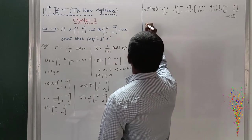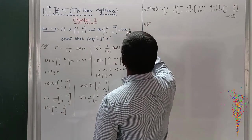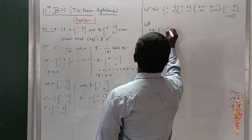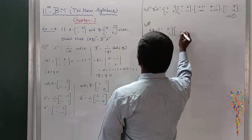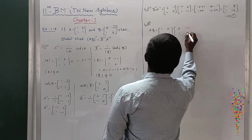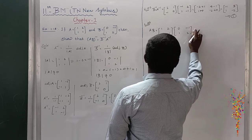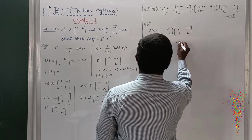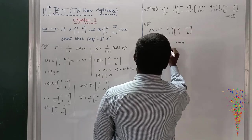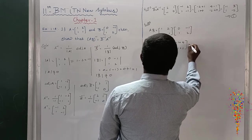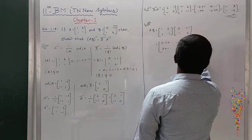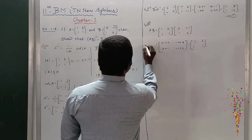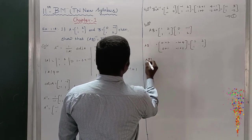Next, the left-hand side. First I want to find out what AB is. A is [1, 2; 1, 1] and B is [0, -1; 1, 2]. Multiplying: (0+2, -1+4), (0+1, -1+2) gives AB equals [2, 3; 1, 1].